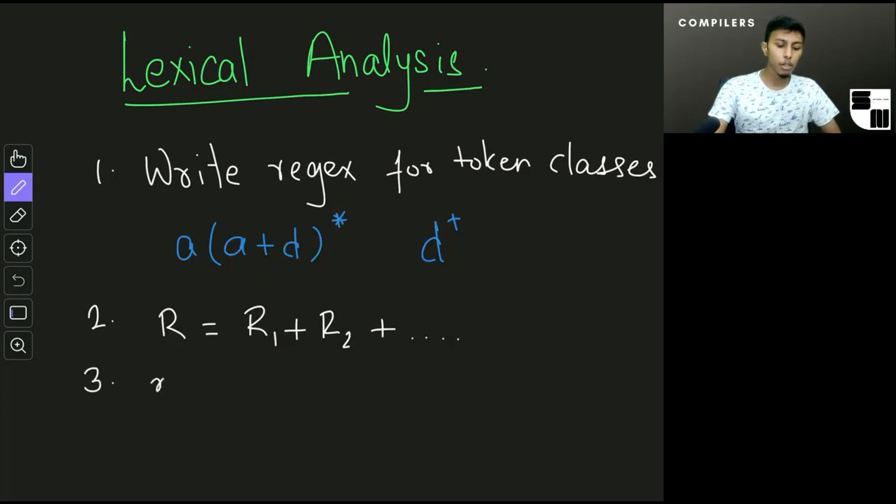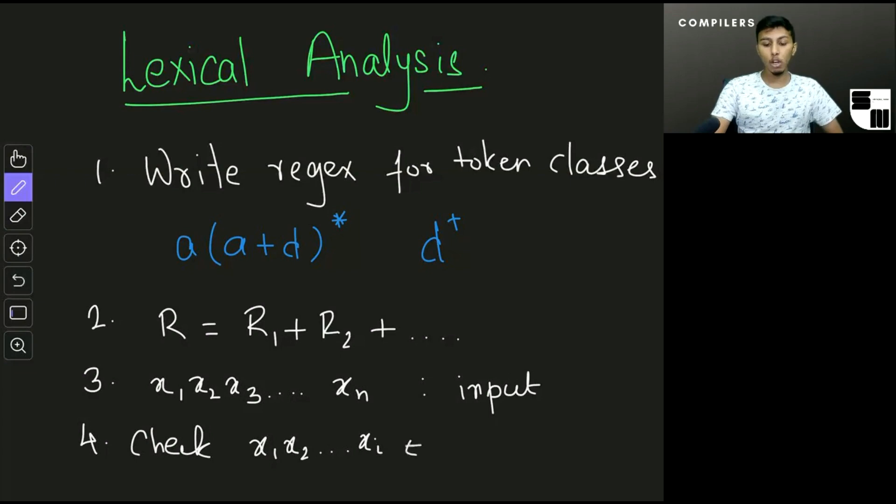Step 3 is consider our input to be x1, x2, x3 and so on up to xn. So this is our input. And step 4 is what we do is we check x1, x2 and so on up to xi whether this belongs to the language represented by R.